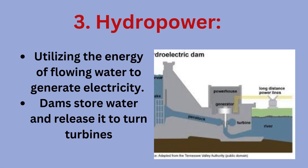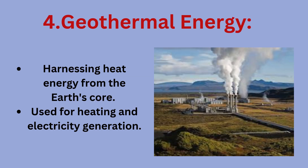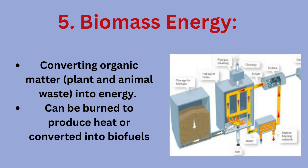Hydropower: utilizing the energy of flowing water to generate electricity. Dams store water and release it to turn turbines. Geothermal energy: harnessing heat energy from the Earth's core, used for heating and electricity generation. Biomass energy: converting organic matter — plant and animal waste — into energy. Can be burned to produce heat or converted into biofuels.